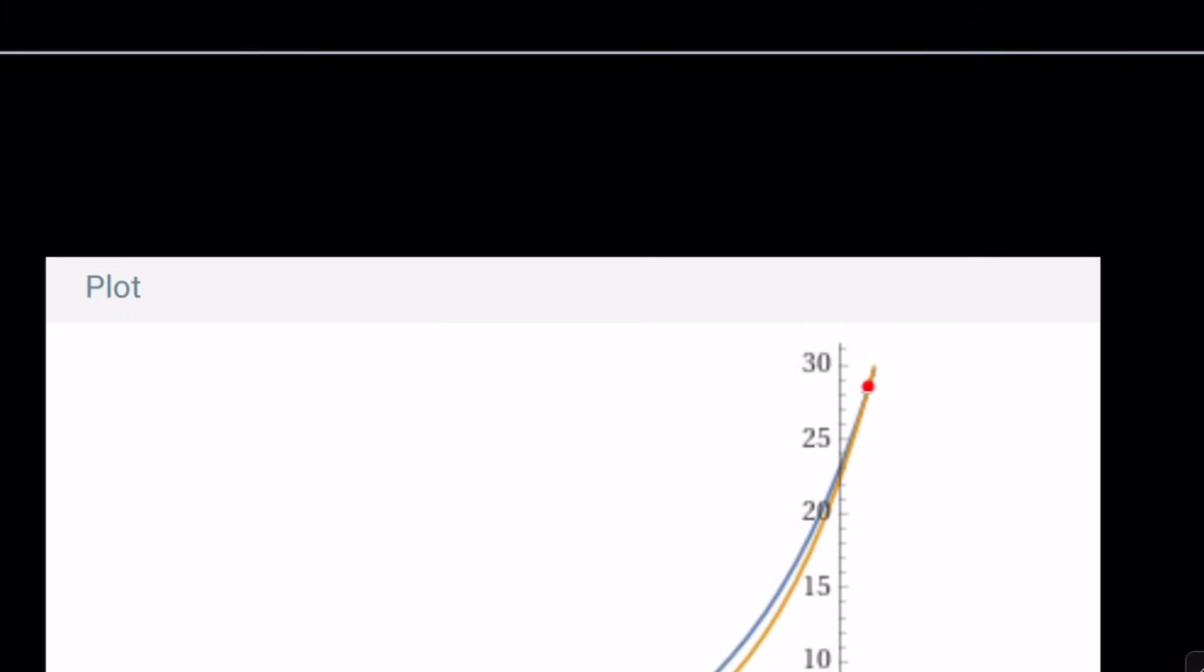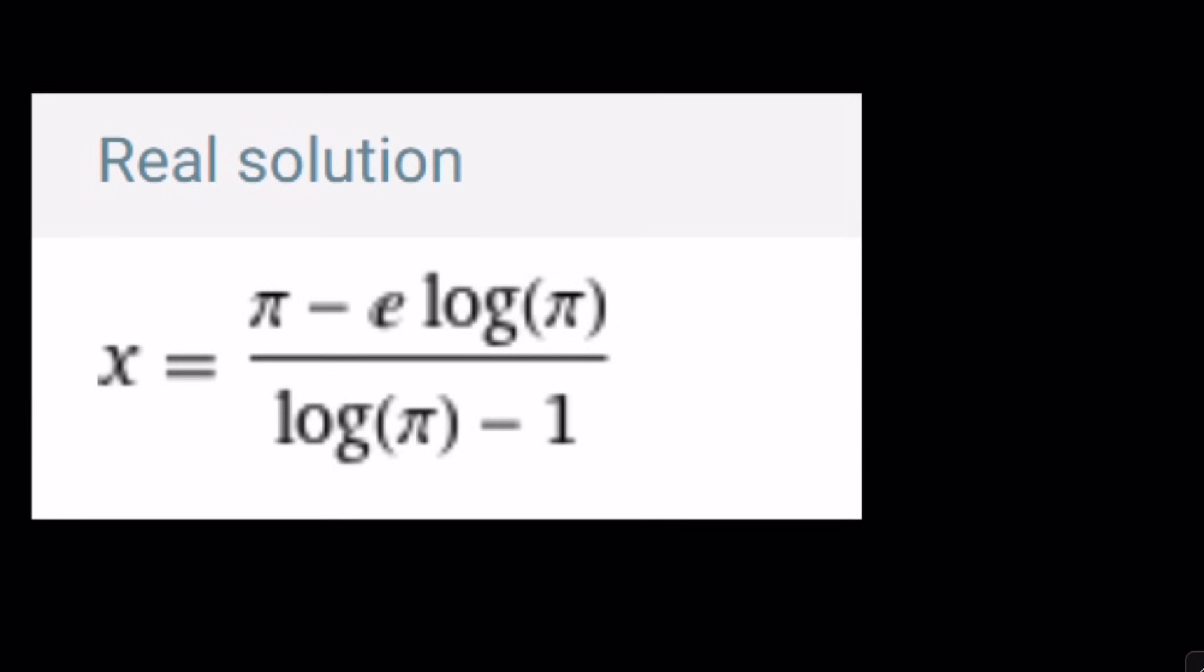Let's take the result from Wolfram Alpha. The real solution is pi minus e. What is log? Well, according to Wolfram Alpha, log is ln, based on Wolfram Alpha's interpretation.